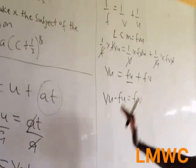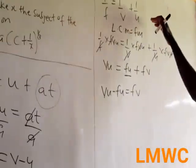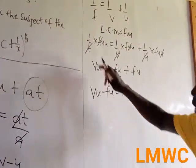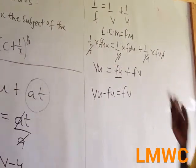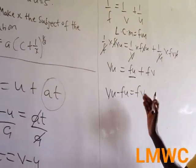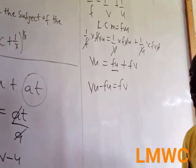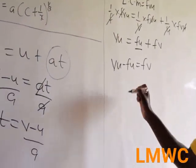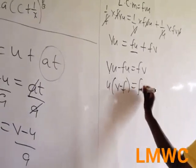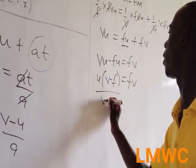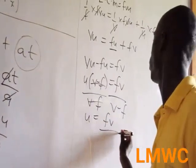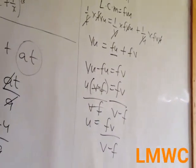If there is a fraction, multiply through by the LCM to eliminate the fraction. And when there is factorization, you apply factorization. The common letter here is u. So u(v minus f) = fv. We divide through by v minus f because we want u. So u = fv over (v minus f).